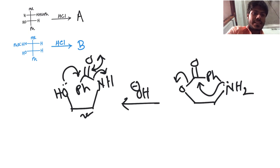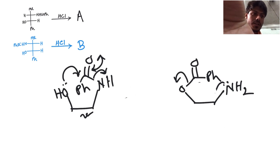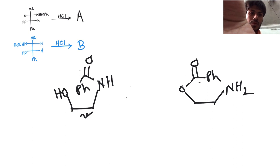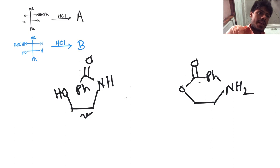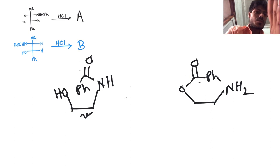In acidic medium, protonation occurs, making the carbonyl carbon electrophilic. The oxygen lone pair easily attacks over here and the intermediate forms. Because it is in acid, the NH2 becomes NH3+, losing its nucleophilic character — there is no lone pair available on nitrogen — and it cannot attack the carbonyl group further. So in acidic medium the reaction stops and becomes irreversible.